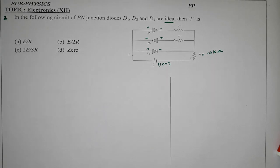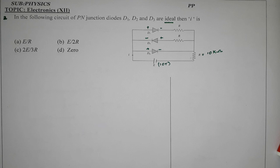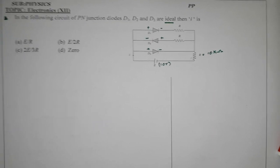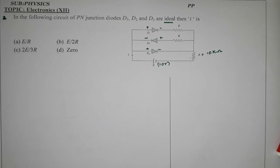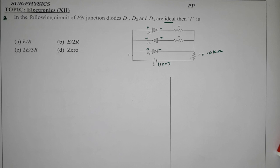Good morning students. Physics and Electronics, second question — first question on diode characteristics: forward bias and reverse bias.